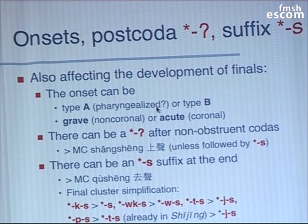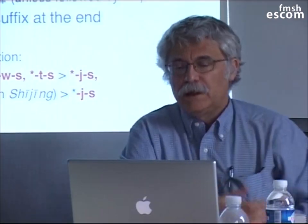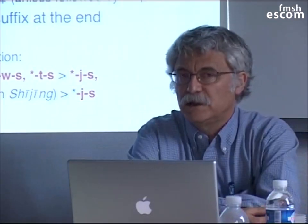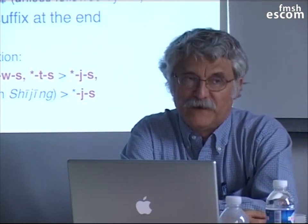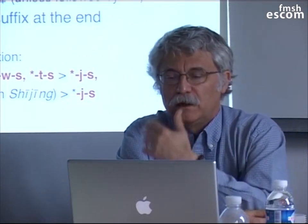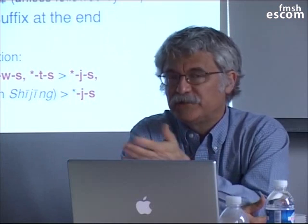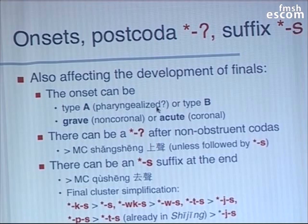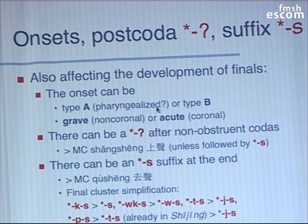I'd also like to point out that the S suffix leads to final consonant clusters, which get simplified. For KS, for example, I think we think it just goes to S — the K disappears. WKS goes to WS, and TS goes to JS, and PS goes to TS.